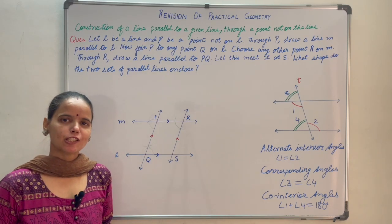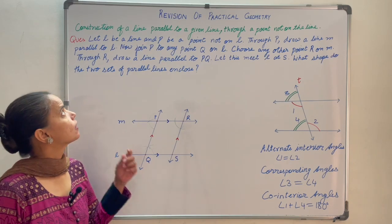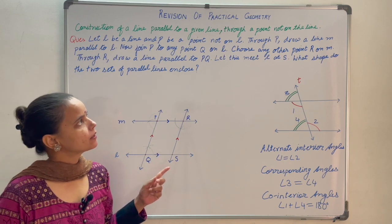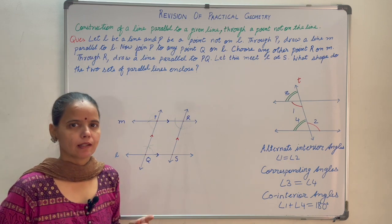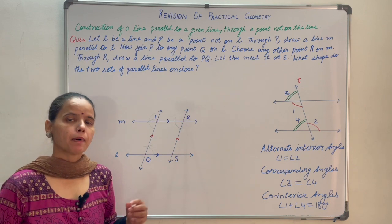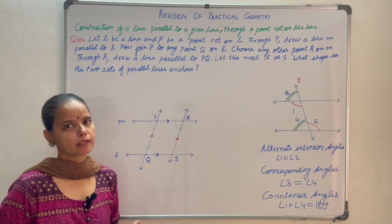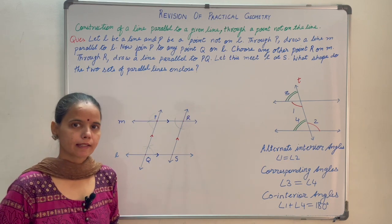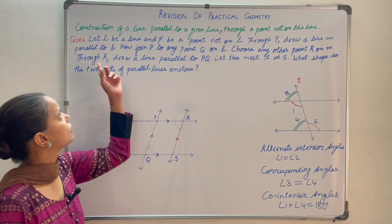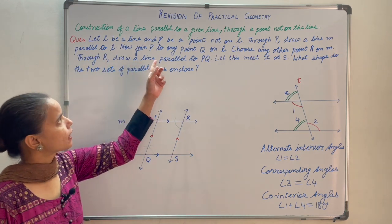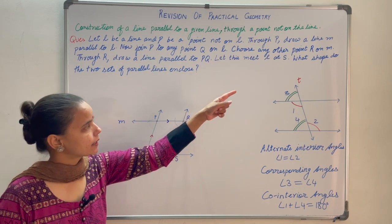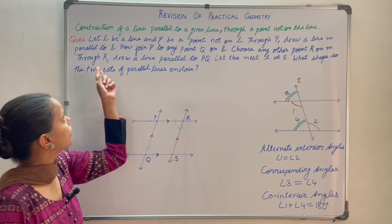Revision of practical symmetry. We look at the construction of a line parallel to a given line through a point not on the line. You have to draw a line parallel to a given line passing through a point which is not lying on the given line. To understand this, let us take this question: let L be a line and P be a point not on L. Through P, draw a line M parallel to L.